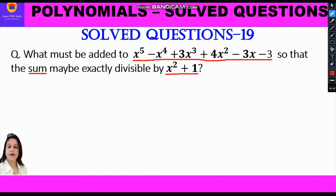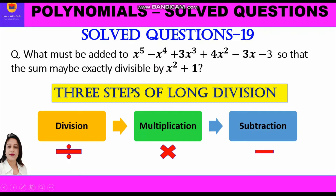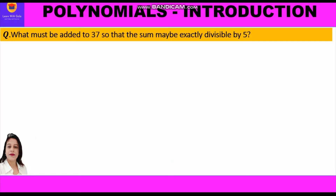In this question, we have to find a term which should be added to the dividend so that the resulting polynomial or sum is exactly divisible by the divisor, that is x² + 1. We shall use the long division method to solve this question. The three steps of long division are: division, multiplication, and subtraction.